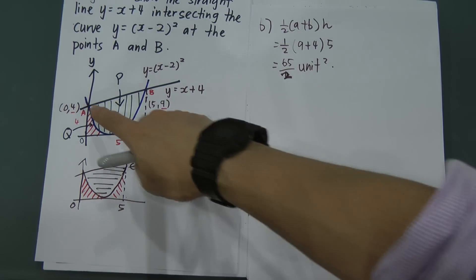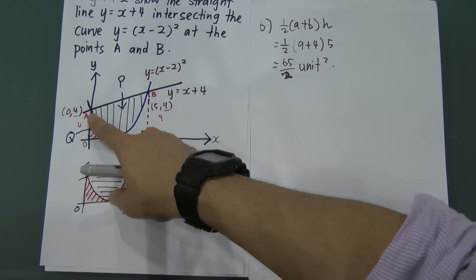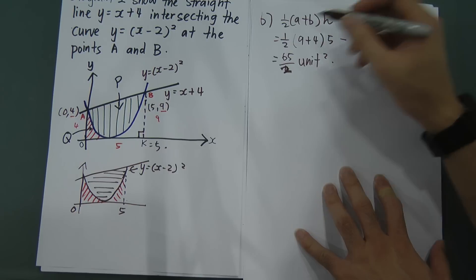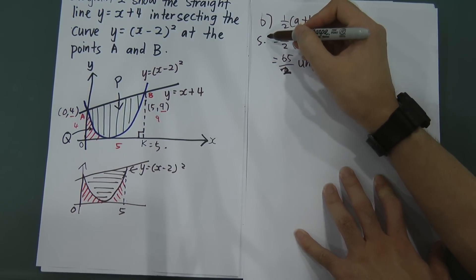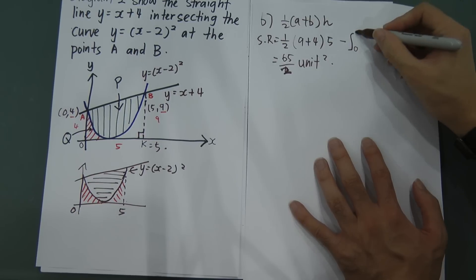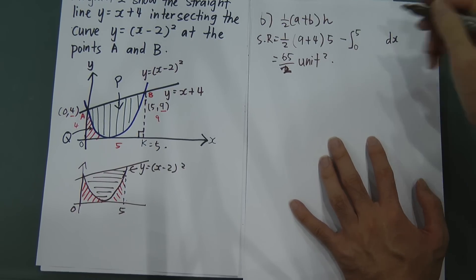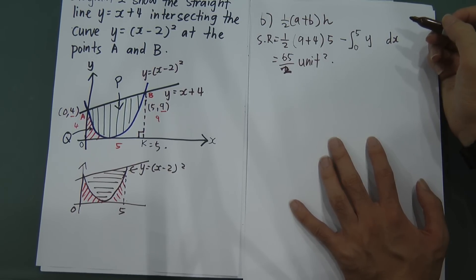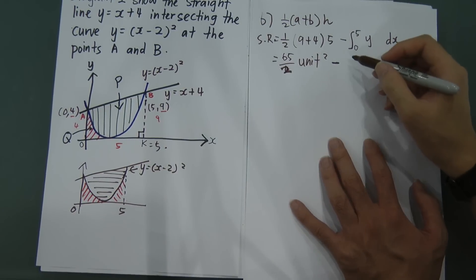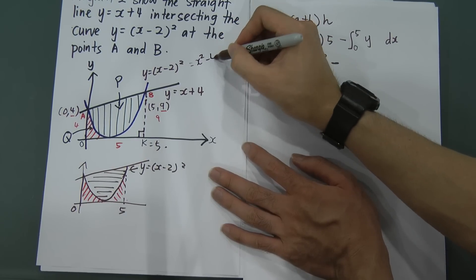Then we have to minus the bottom part — we have to find the area for the curve region, which means we integrate the curve. The integral is from 0 to 5, along the x-axis, so we write dx. The y for the curve is x minus 2 squared. I expand this to x squared minus 4x plus 4, so we can integrate easily.